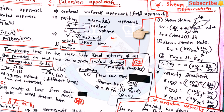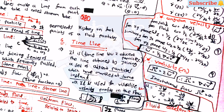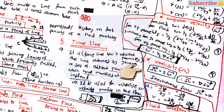For deformation, the volumetric strain epsilon-v equals del-u by del-x plus del-v by del-y. Shear stress tau-xy equals mu into del-v by del-x plus del-u by del-y. Angular velocity omega equals 1 upon 2 into del-cross-v-bar. Vorticity omega equals 2 into angular velocity. Omega also equals del-cross-v-bar. For irrotational flow, omega equals zero.